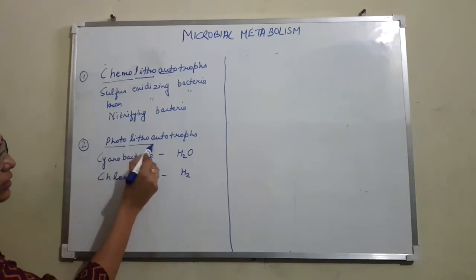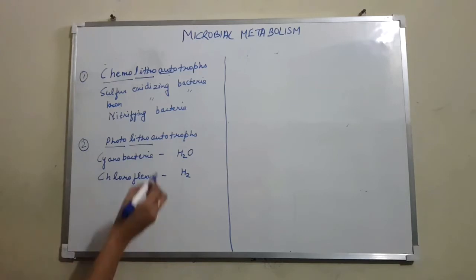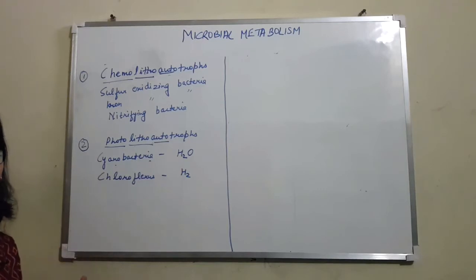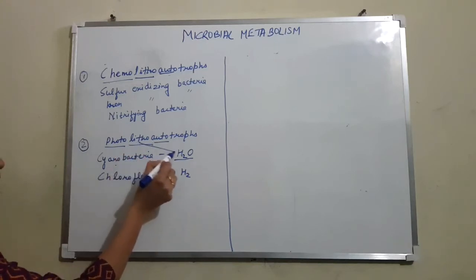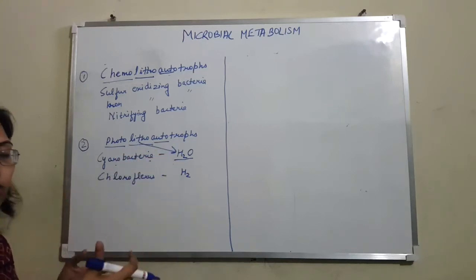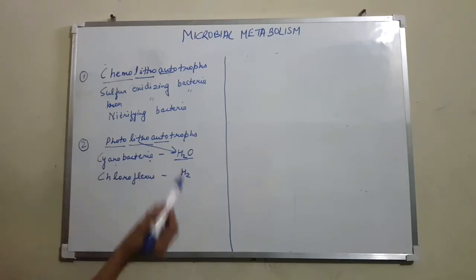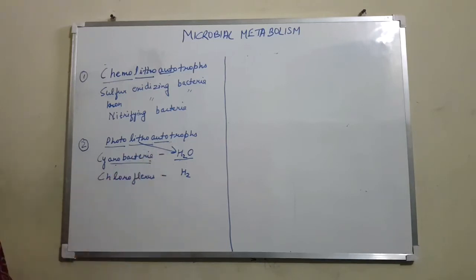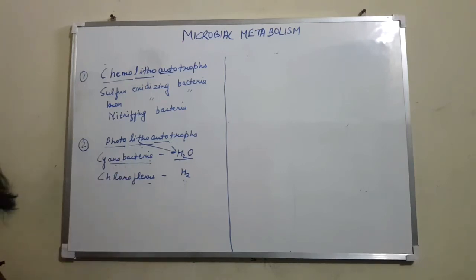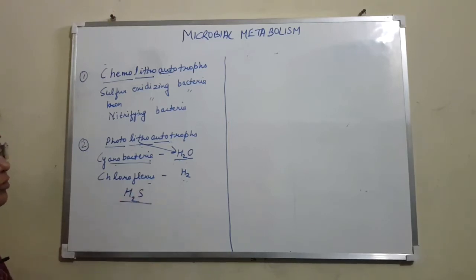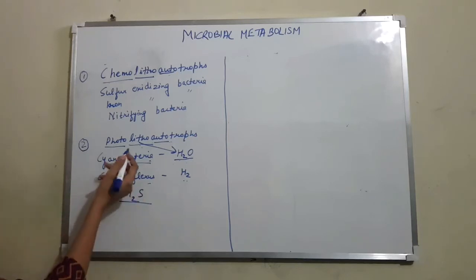The next category is photo-litho-autotrophs: light as energy source, inorganic compounds as source of electron or hydrogen atom, and able to fix carbon dioxide. An example is cyanobacteria, which utilizes water as the hydrogen donor — an inorganic compound for reducing equivalents — while using light as energy and fixing carbon dioxide. Another example is Chloroflexus, which uses hydrogen as the inorganic reducing equivalent. Some microorganisms can also utilize hydrogen sulfide for their reducing equivalents.